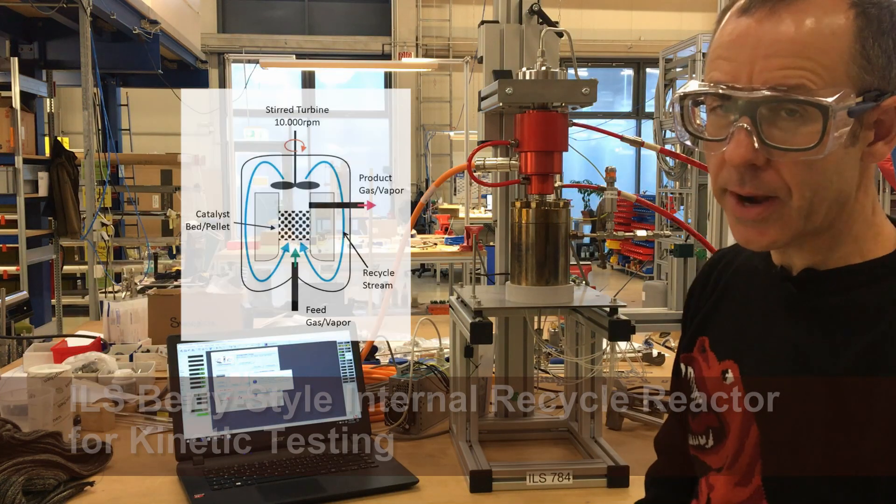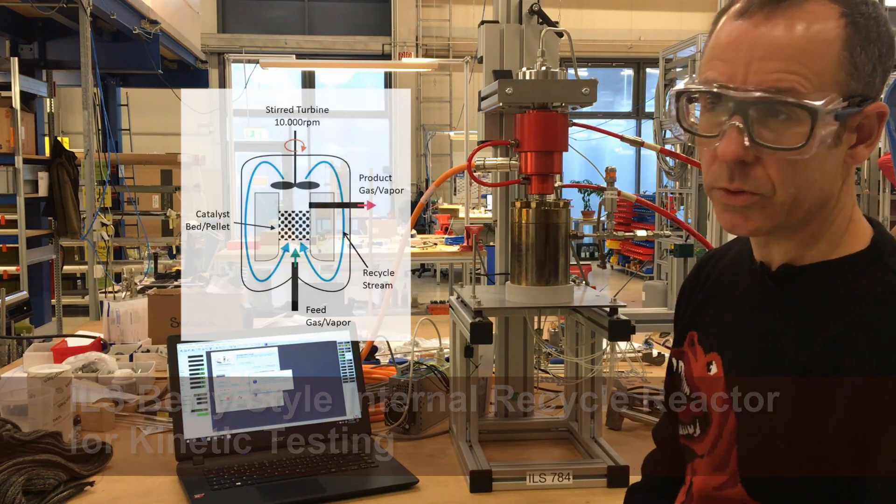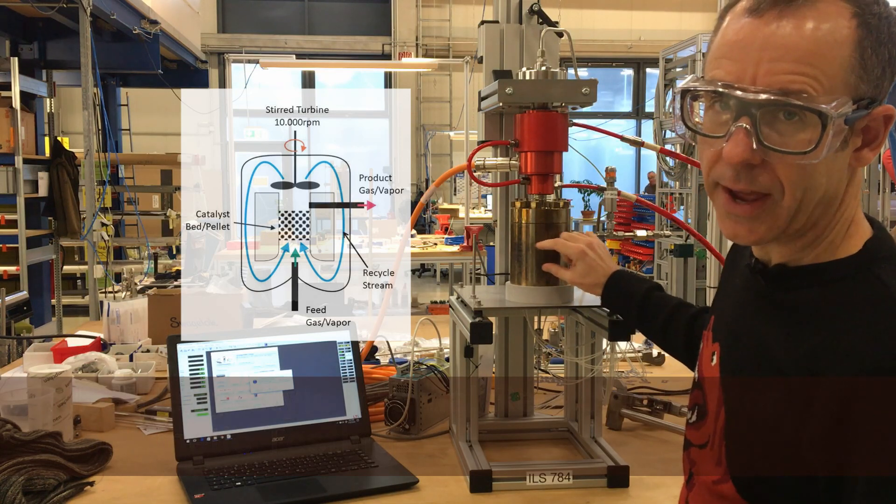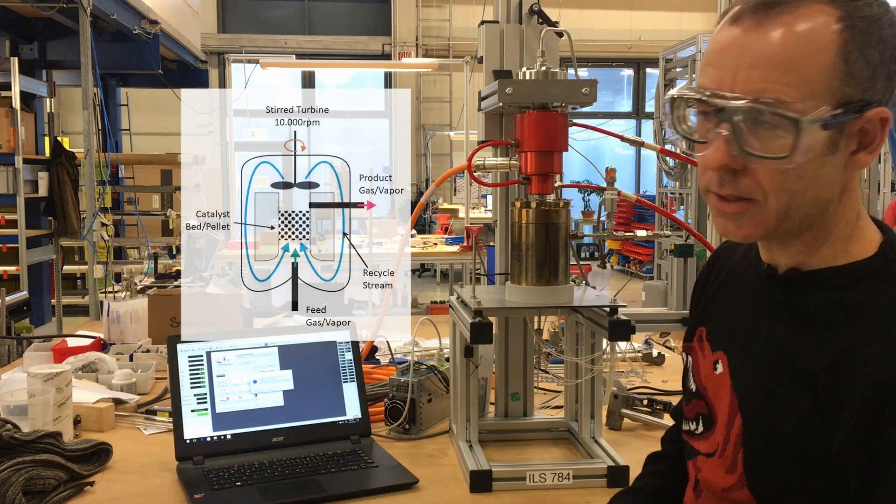The Birdie reactor is basically a fixed bed reactor that operates in recycle mode. So it looks a bit like a batch reactor, but in reality it's a fixed bed. Either catalyst particles or, for example, a single catalyst pellet can be tested here.